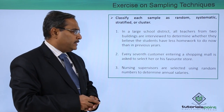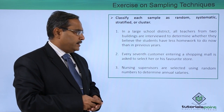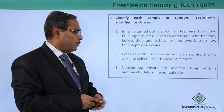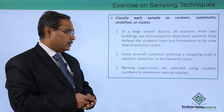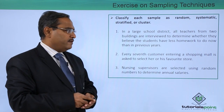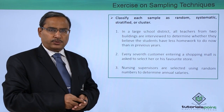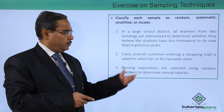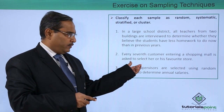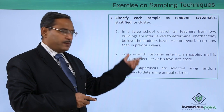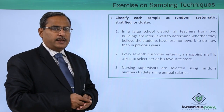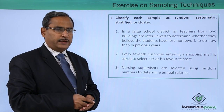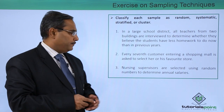Every seventh customer entering a shopping mall is asked to select his or her favorite store. Since we are selecting every seventh customer, we can consider this a good example of systematic sampling.